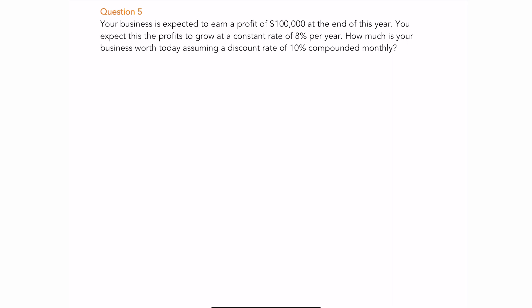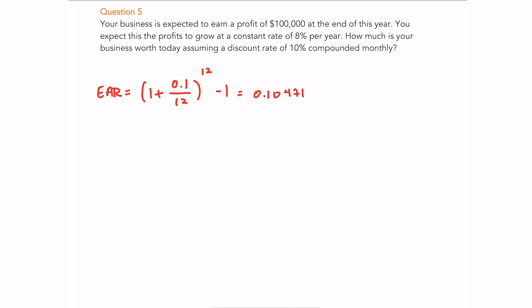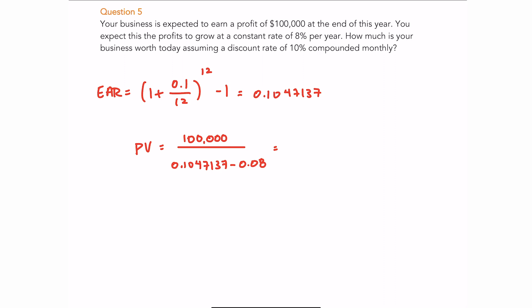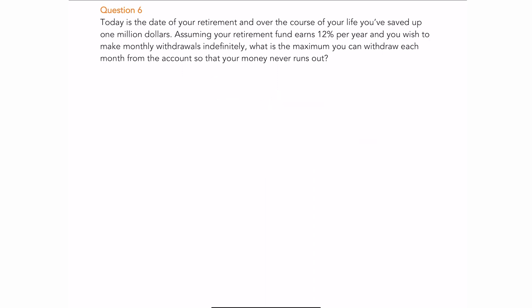Since the cash flows are annual, we need an effective annual rate. Take (1 + 0.10/12)^12 − 1 = 0.1047137. Now, the present value of a growing perpetuity is the first cash flow ($100,000) divided by (effective annual rate minus the constant growth rate of 8%). Today this business is worth $4,046,442.24.